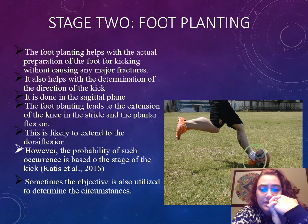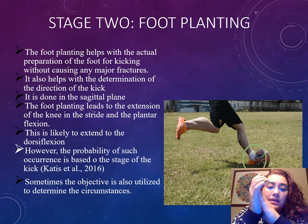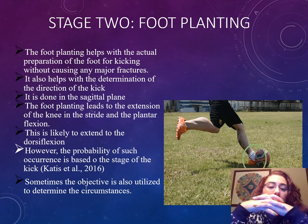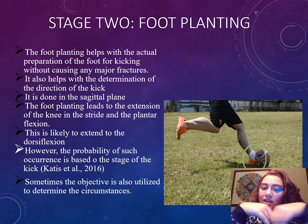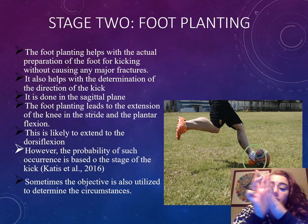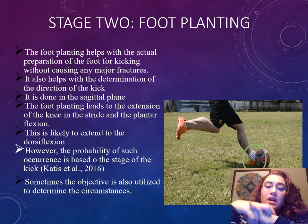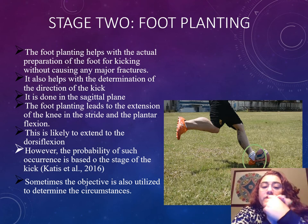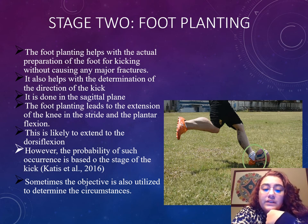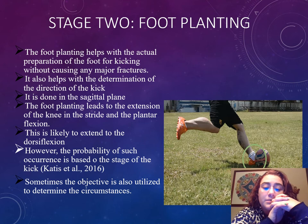Stage two is foot planting. This is the actual physical preparation of the foot for kicking without causing any major fractures. It also helps determine the direction of the kick. It's done on the sagittal plane. The foot planting leads to the extension of the knee and the stride and the plantar flexion. It's likely to extend the dorsal flexion; however, the probability of such occurrence is based on the stage of the kick. The objective is also utilized to determine the circumstances.